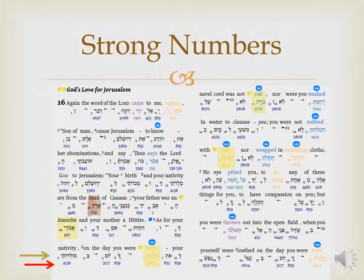There are many ways to get to the original language behind our English text, but we'll look at just a couple. The most common way is to use a resource that gives you the Strong's number for the word you're looking up. On the slide, the Strong's number is either above or below the word. The word 'nativity' has the Strong's number 4138. You'd then use the Strong's dictionary, look up that number in numerical order, and find what that Hebrew word is and what it means.